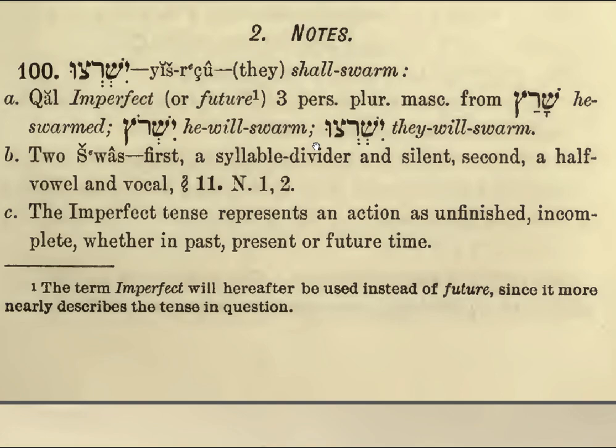There are two Shwas here. The first is the syllable divider, and the second is the half vowel starting off the second syllable: Yish Rots, Rotsu. In the Spanish and Portuguese pronunciation this is slightly more pronounced than it is in the Ashkenazi. Yish Rotsu. So, the imperfect tense.